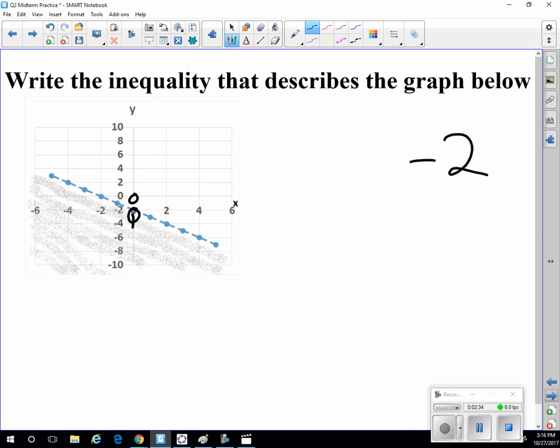Find the slope. We go down 2 over 2. Down 2 over 2. So the slope is negative 1. So we could say negative 1x, or we could just say negative 1.